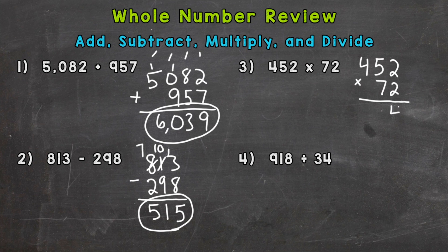So: 2 times 2 is 4. 2 times 5 is 10 — carry the 1. 2 times 4 is 8, plus that 1 is 9. I'm done with this 2 and that regrouped 1.